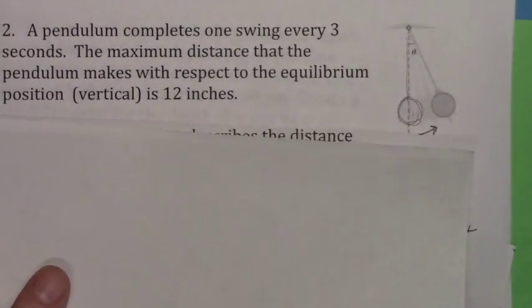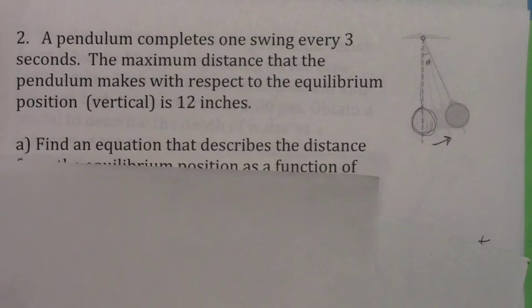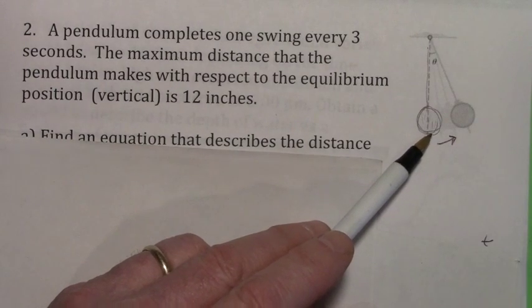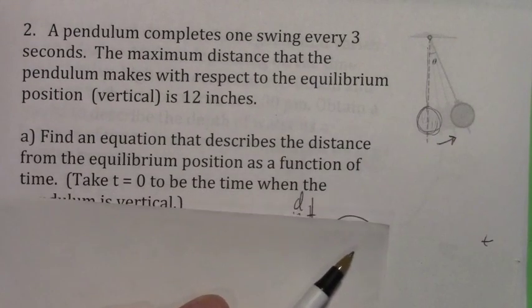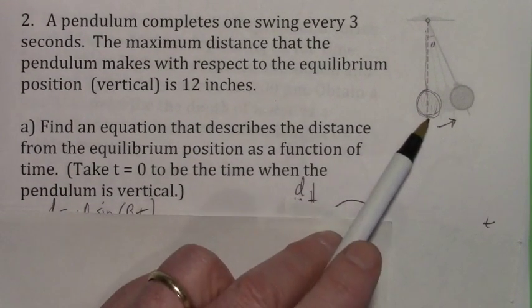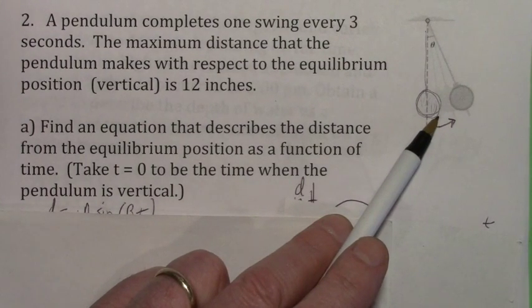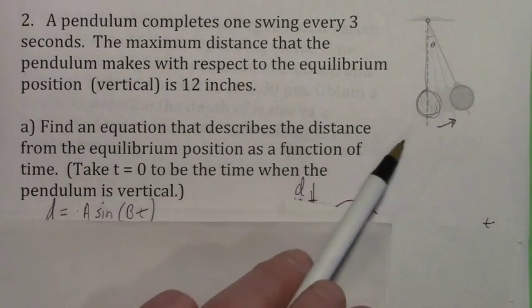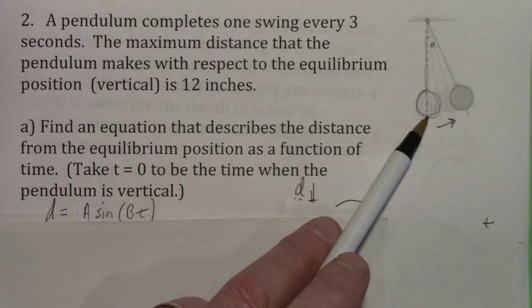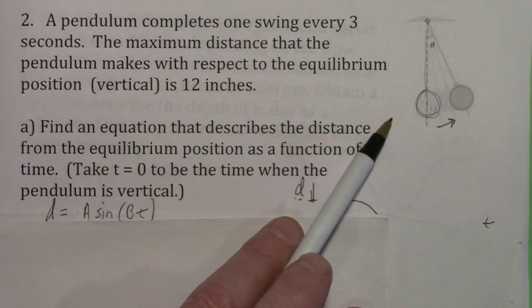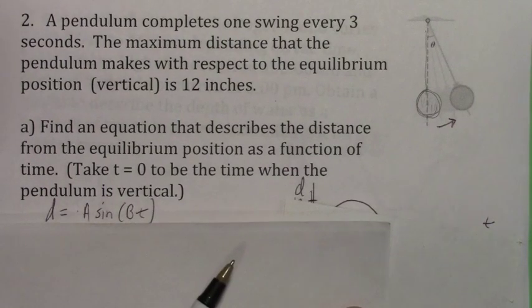A pendulum is swinging. The pendulum is at this vertical position, and at t equals 0 we assume it's at the vertical position and swinging to the right. The furthest it goes is 12 inches away from the equilibrium position, and it completes 1 cycle every 3 seconds. That means it goes to the extreme right, back to the middle, extreme to the left, and back to the middle — that's 1 cycle.